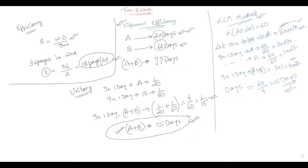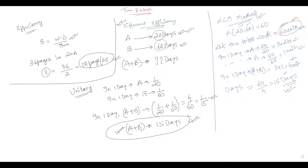Instead of taking 60 units — which is the LCM of 20 and 60 — we could have assumed some other number as the total unit of work. But in that case, the numbers won't be easy and the calculation may become difficult. That is why it is always better to take the LCM of the numbers so that the calculation becomes very easy.